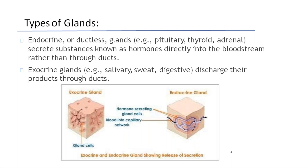Coming to the types of glands: these are endocrine or ductless glands, like the pituitary, thyroid, and adrenal. These secrete substances known as hormones directly into the bloodstream rather than to ducts. Next are the exocrine glands — examples include salivary glands, sweat glands, and digestive system glands. They discharge their products to the ducts.